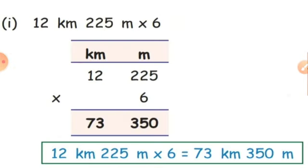First sum: 12 kilometer 225 meter multiplied by 6. This sum has two units — one is kilometer and the other is meter. The first thing is you have to write the units. The biggest unit will come first, so here kilometer is the biggest unit, so first write kilometer. After that you have to write meter.